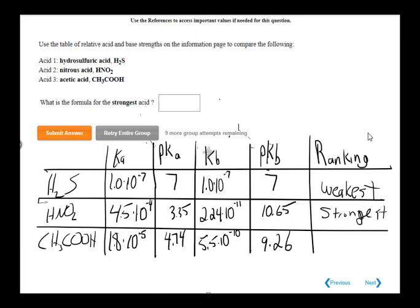Notice how the pKa values trend with the ranking. The weakest acid has the largest pKa value, and the strongest acid has the smallest pKa value.